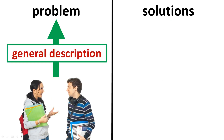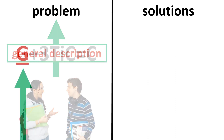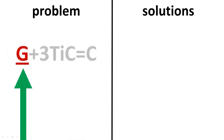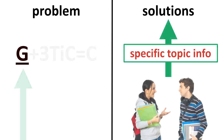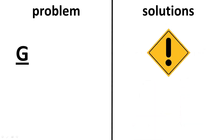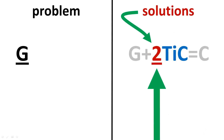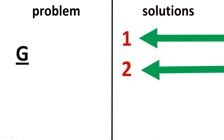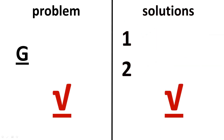When the students speak, they will start by giving a general description of the problem. Therefore, under problem, put G for general. When the students describe the solutions to the problem, they will give specific topic information. Please remember, you will hear two solutions. To save time on test day, simply write 1 and 2 under solutions. My note map is now complete.